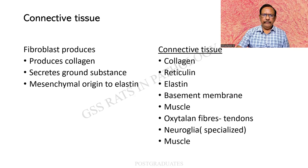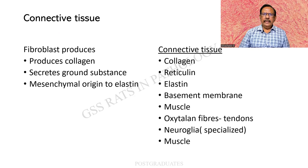Let us focus on the other elements. It is always better that we know the basics — the components which we are going to stain. The fibroblast produces collagen; it can be a precursor of collagen. It also secretes the ground substance and yields a mesenchymal origin to elastin. So elastin is another substance we shall be dealing with.